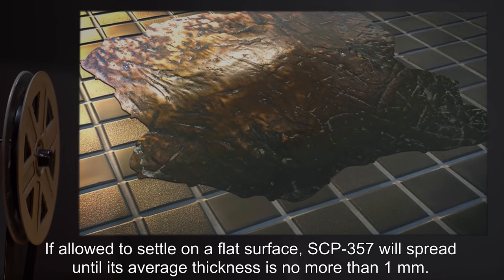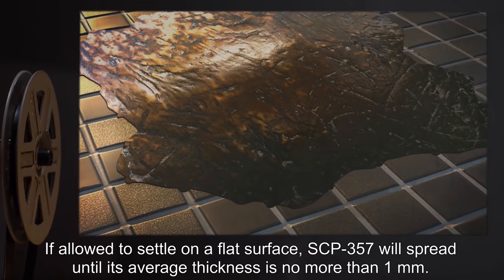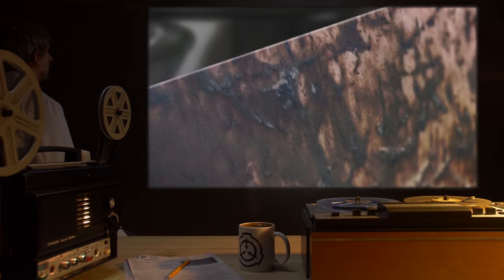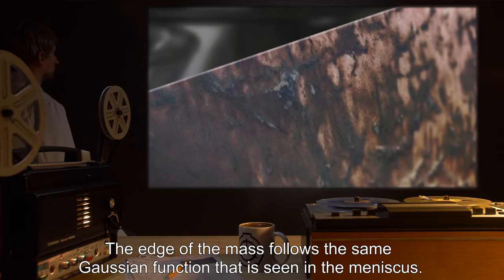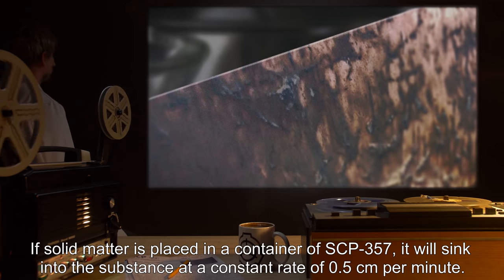If allowed to settle on a flat surface, SCP-357 will spread until its average thickness is no more than 1 millimeter. The edge of the mass follows the same Gaussian function that is seen in the meniscus.